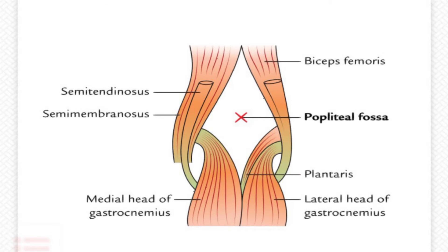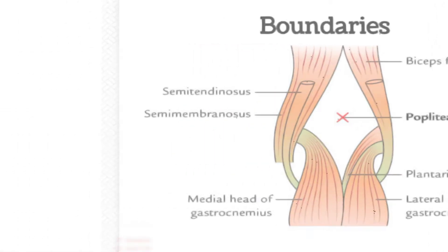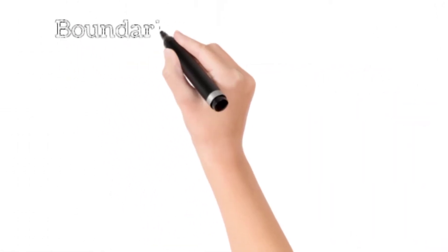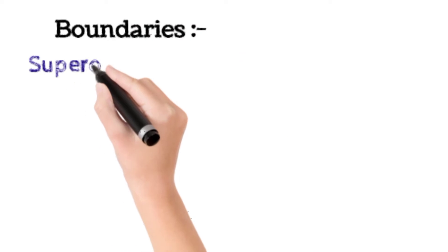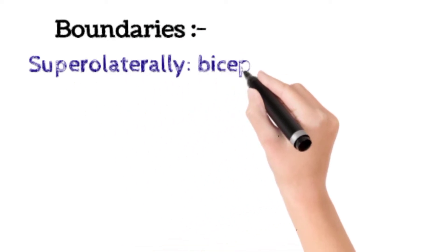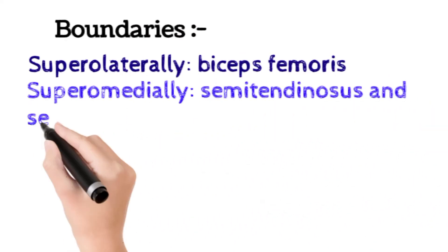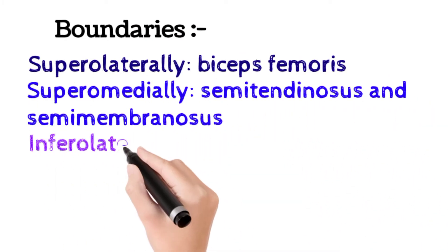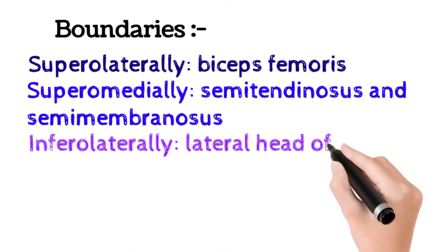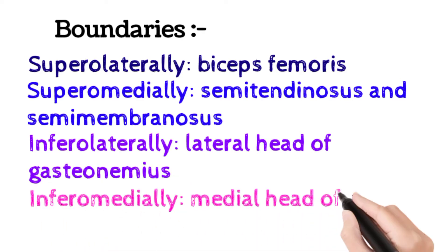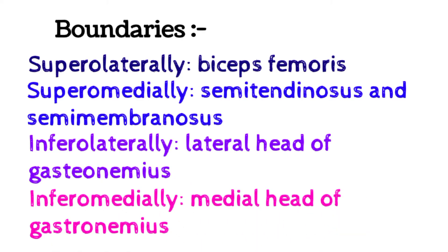As you can see, these are the boundaries depicted in the above picture. The boundaries are: superiorly laterally by the biceps femoris; superiorly medially by the semitendinosus and semimembranosus; inferiorly laterally by the lateral head of gastrocnemius; and inferiorly medially by the medial head of gastrocnemius.